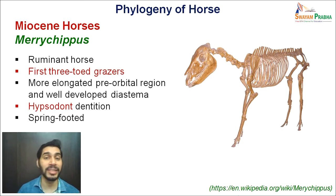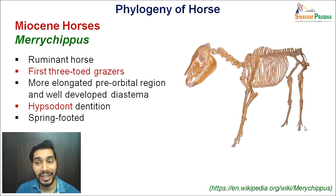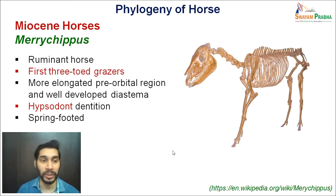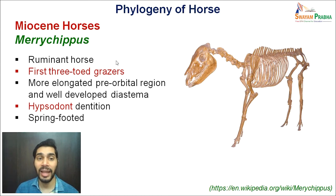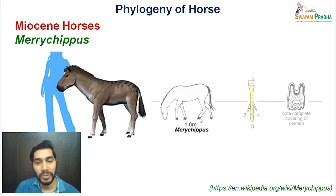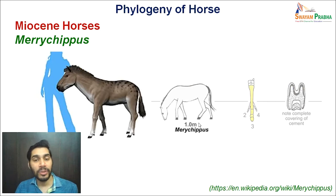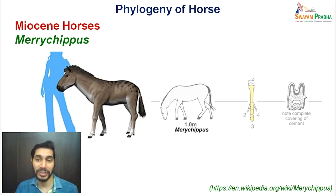Merychippus was spring-footed, meaning the spring mechanism is increasing. In this fossil, you can see they have a single dominant toe with lateral toes not even touching the ground, so they are slowly attaining the unguligrade kind of locomotion. Most prominently, they have hypsodont dentition and a grazing mode unlike previous forms. Focusing on height, it is now almost 1 meter — earlier we saw 0.4 meter and 0.6 meter. Still three-toed, but with hypsodont dentition and increased crown size, they have adopted the grazing mode.